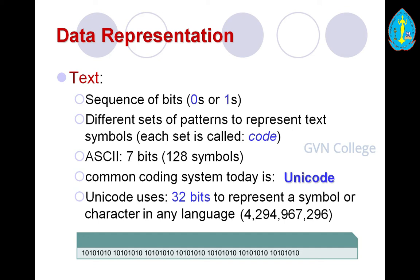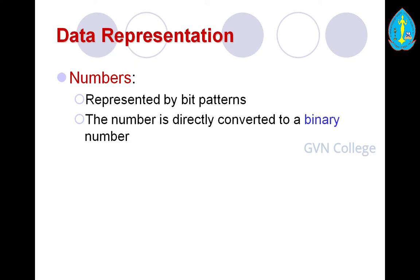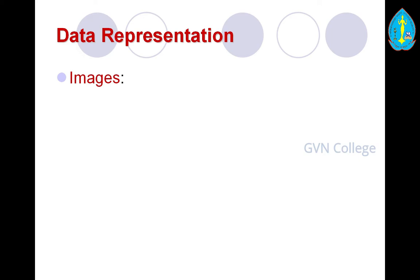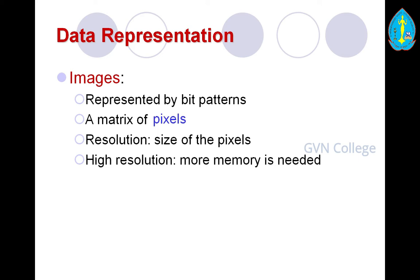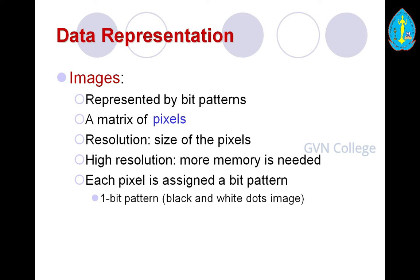The next important data representation is numbers. Numbers represent bit patterns, and a number is directly converted to a binary number. Images are also represented by bit patterns in a matrix of pixels. Resolution refers to the size of pixels, which determines the clarity of the image — higher resolution requires more memory. Each pixel is assigned a bit pattern: one bit pattern is used for black and white, two bit patterns give four levels of gray — 00, 01, 10, 11.